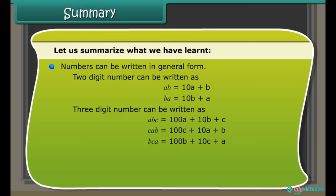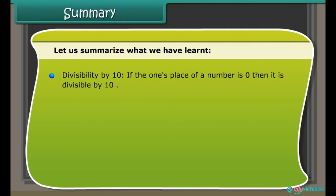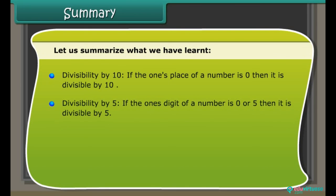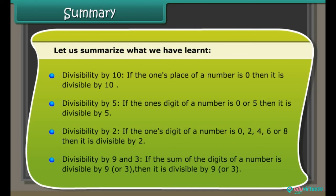BCA = 100B + 10C + A. This general form of numbers is useful in solving puzzles and number games. Divisibility by 10: if the ones digit is 0, the number is divisible by 10. Divisibility by 5: if the ones digit is 0 or 5, it is divisible by 5. Divisibility by 2: if the ones digit is 0, 2, 4, 6, or 8, it is divisible by 2. Divisibility by 9 and 3: if the sum of the digits is divisible by 9 or 3, then the number is divisible by 9 or 3.